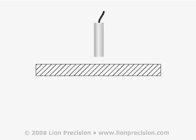High-resolution capacitive sensors enable very precise thickness measurements of conductive targets. There are two methods of measuring thickness with capacitive sensors. The first uses a simple single-channel measurement. The second uses two channels, which eliminates some potential error sources.